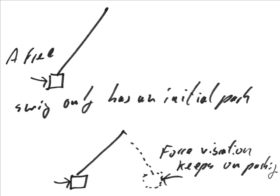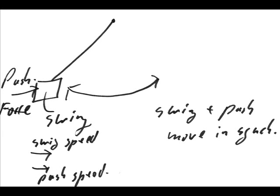When you force objects to vibrate, you create a system with two oscillators: the driver and the driven oscillator. For frequencies below the natural frequency of the driven oscillator, the driver and driven oscillators are in phase with each other. When the driver moves forward, the driven moves forward too. This is true up to the natural frequency.